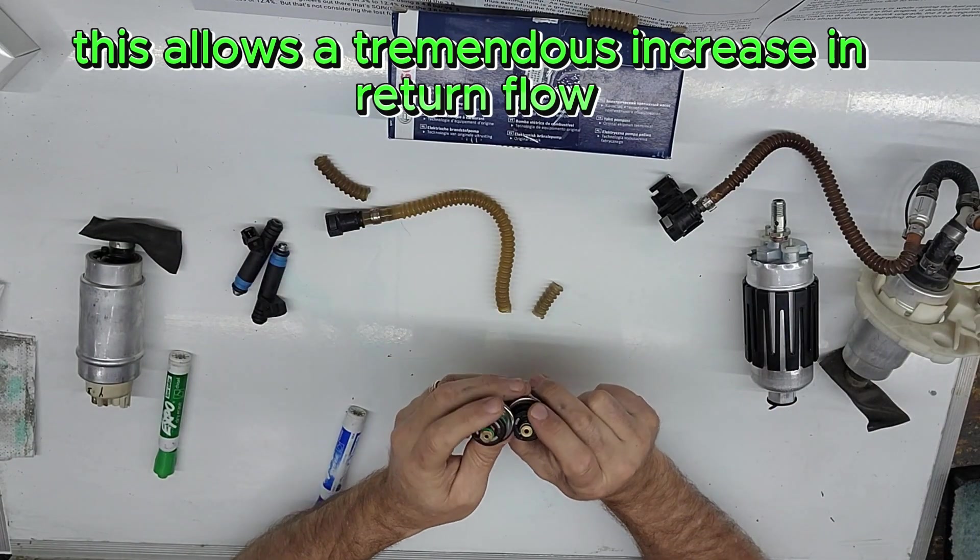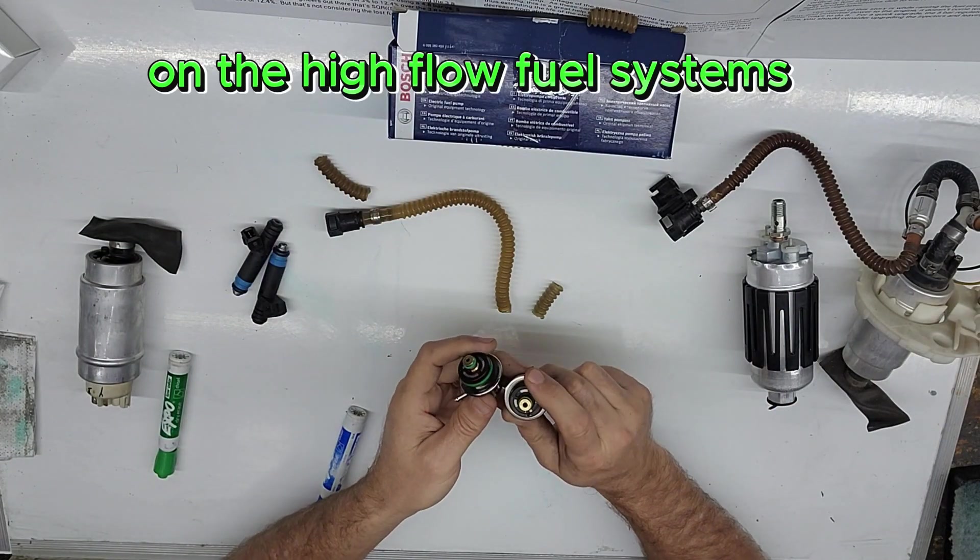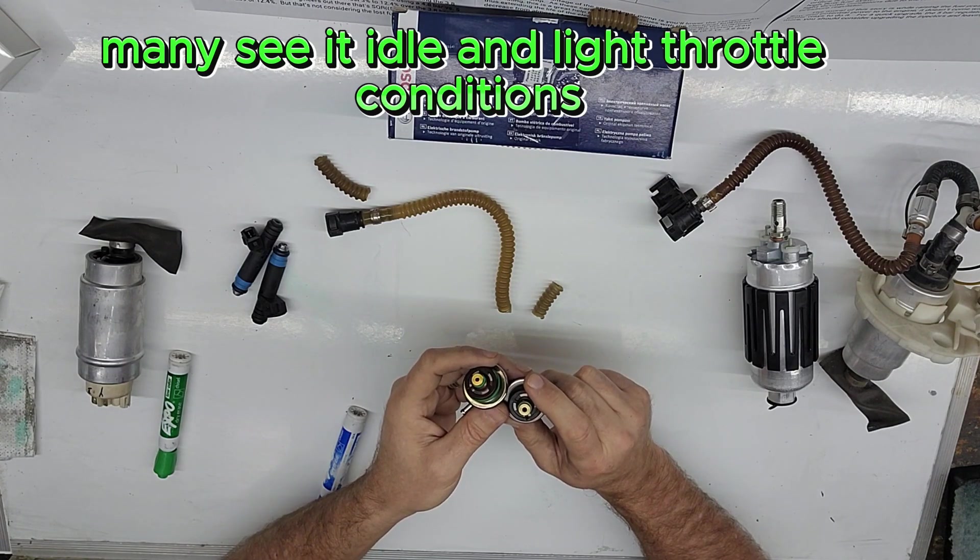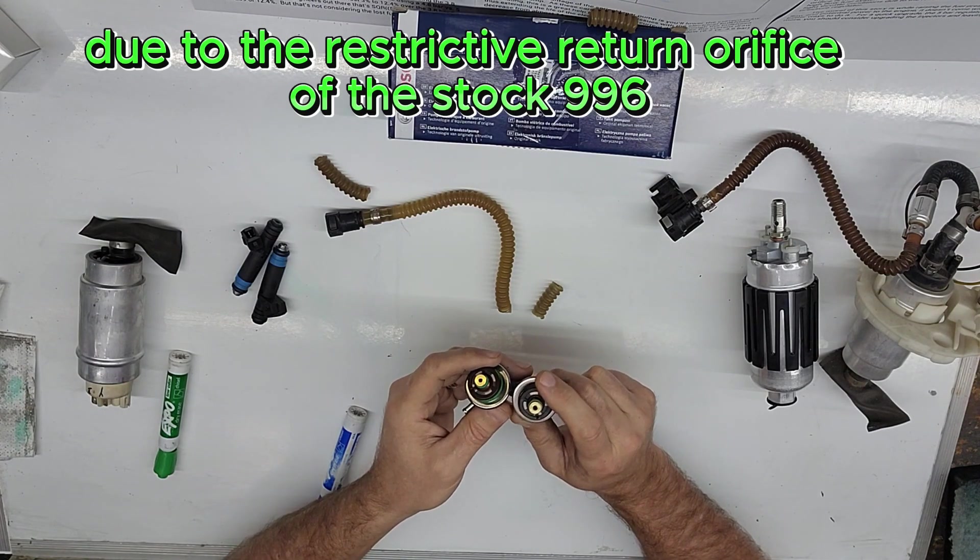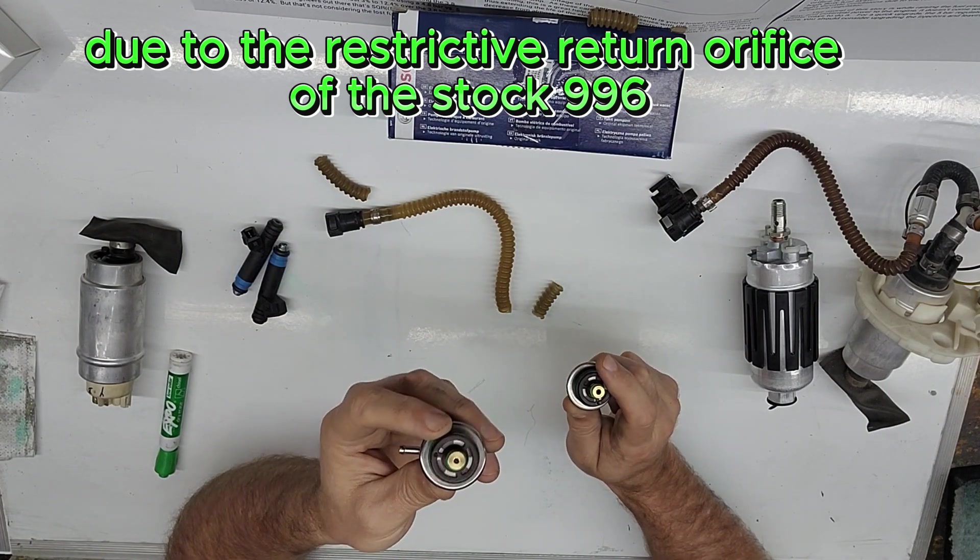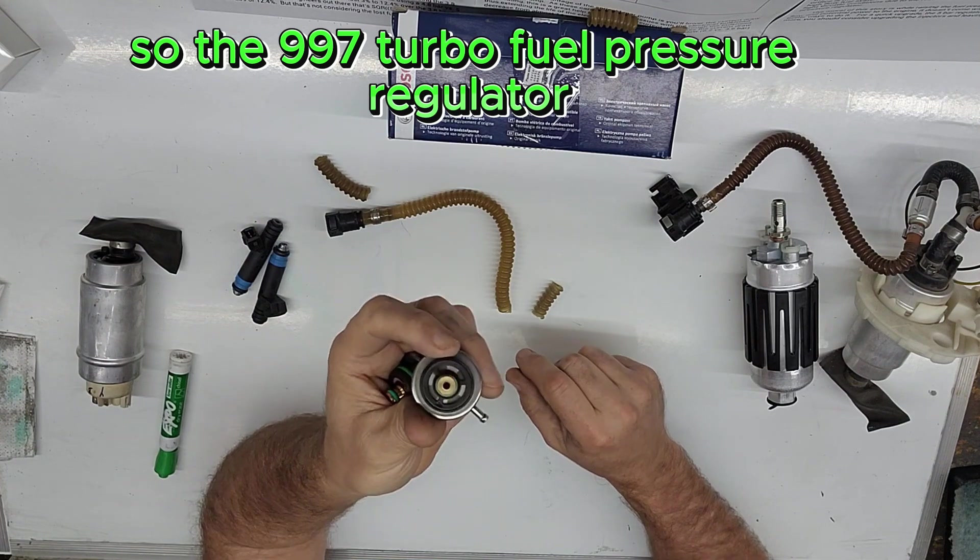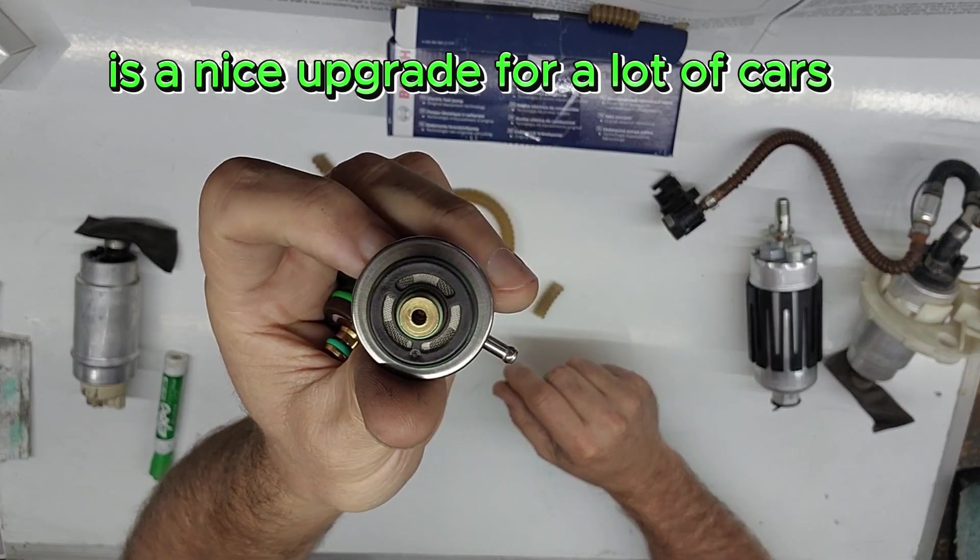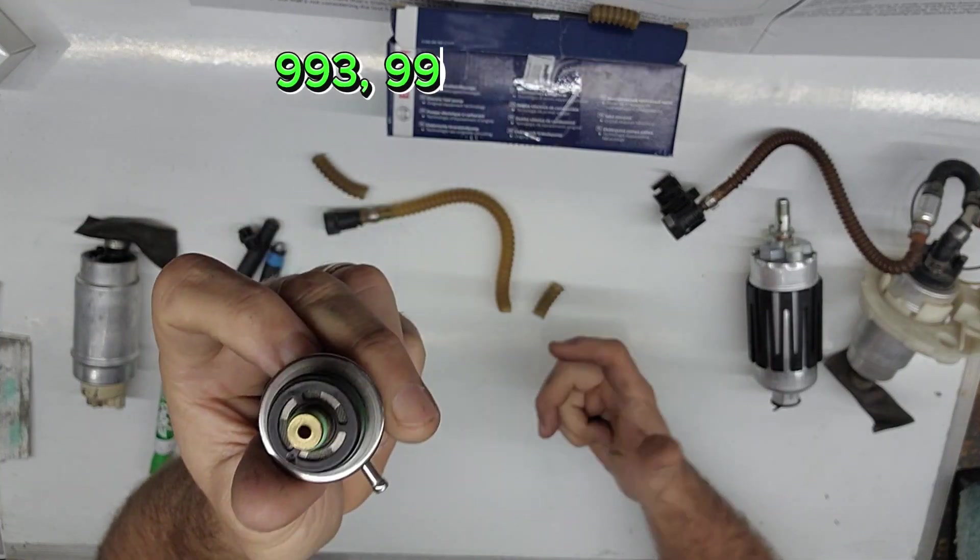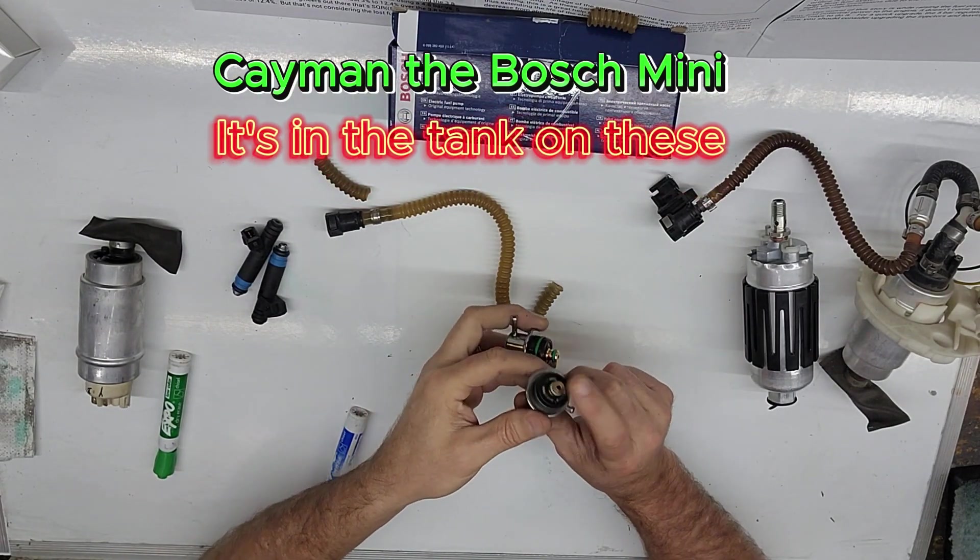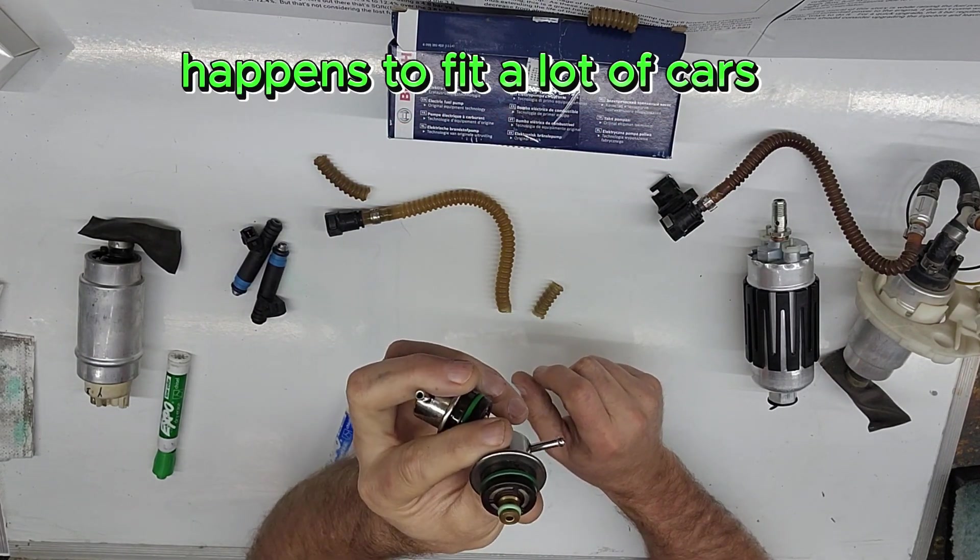This allows a tremendous increase in return flow on the high flow fuel systems. This will negate the high fuel pressure many see at idle and light throttle conditions due to the restrictive return orifice of the stock 996 turbo fuel pressure regulator. So the 997 turbo fuel pressure regulator is a nice upgrade for a lot of cars. The 993, 996, Boxster, Cayman, the Bosch Mini happens to fit a lot of cars.